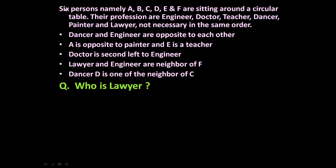The given problem is: six persons namely A, B, C, D, E and F are sitting around a circular table. Their professions are engineer, doctor, teacher, dancer, painter and lawyer.